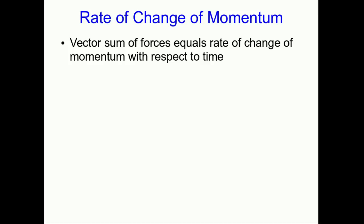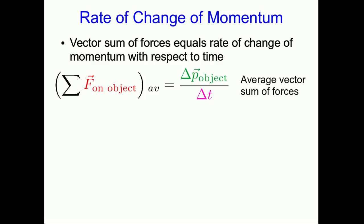We know that the vector sum of forces is the time rate of change of momentum, and I've been writing that as delta P over delta T, but that's an average time rate of change of momentum. Rather awkwardly, I then have to write that it's the average vector sum of the forces.